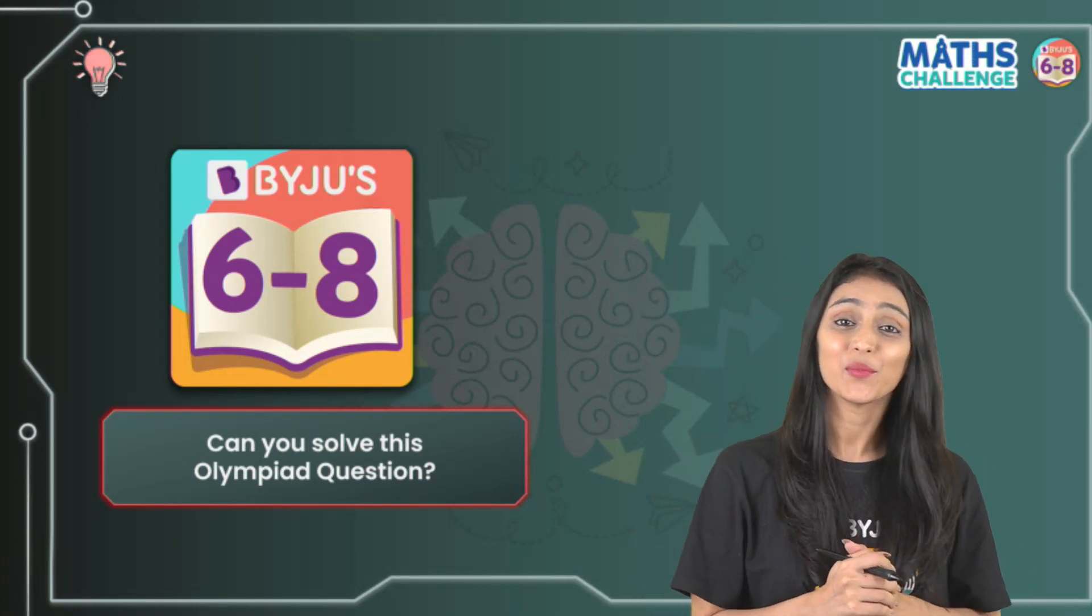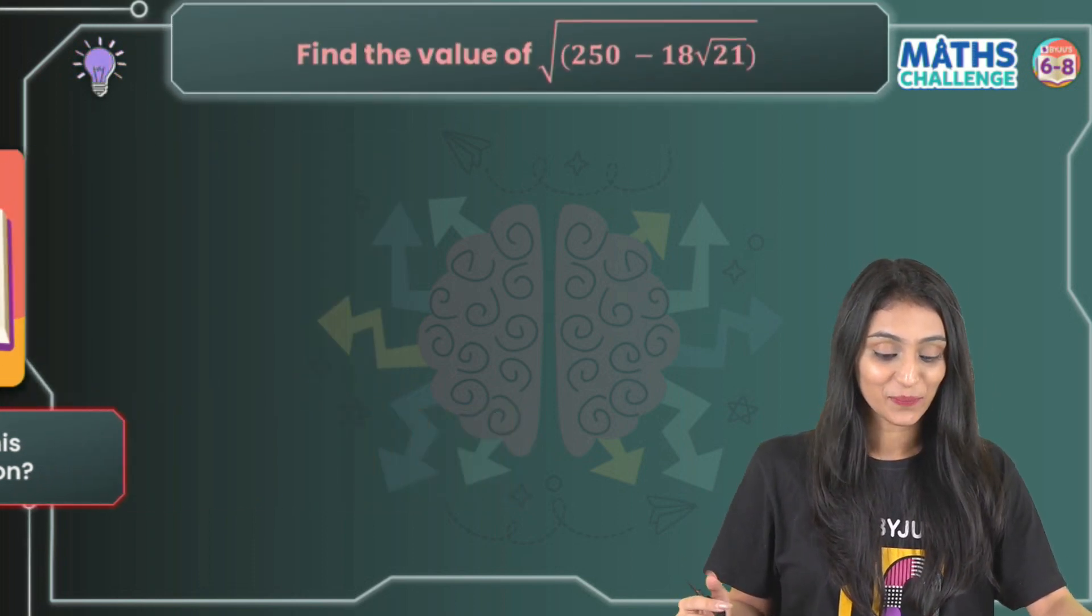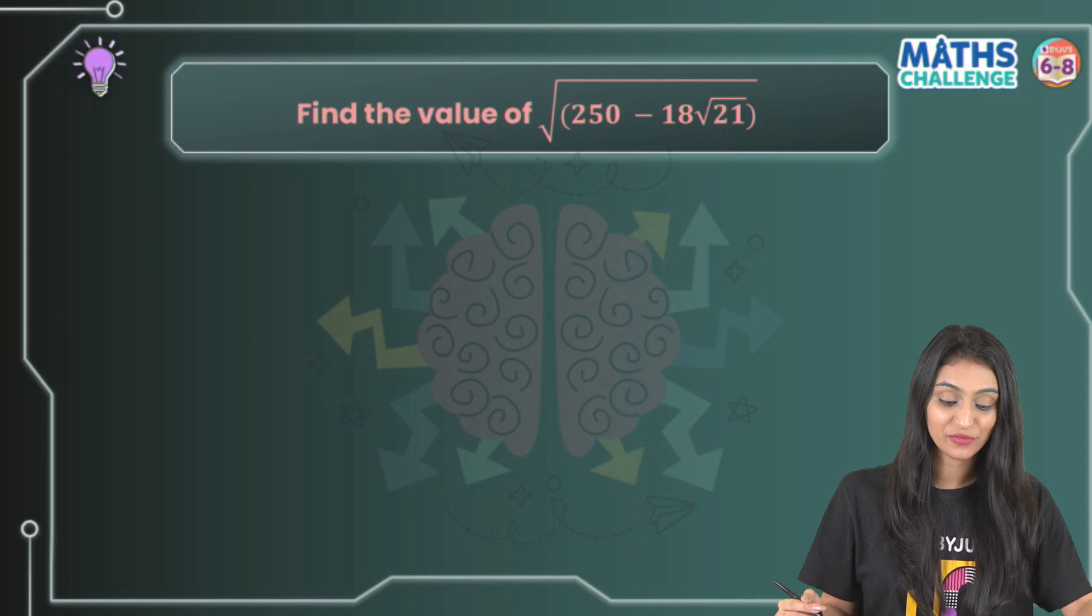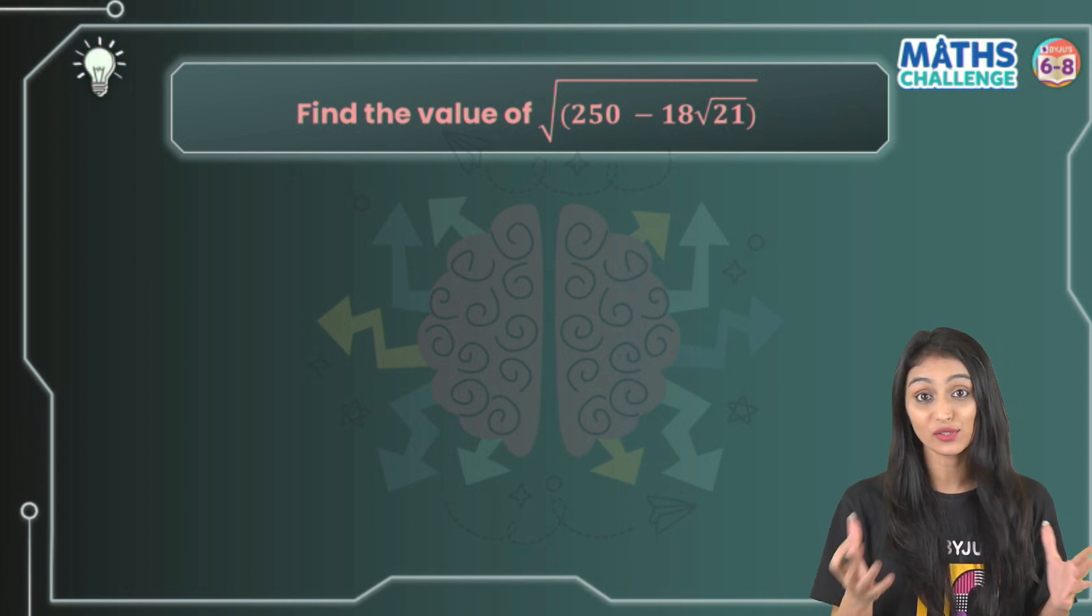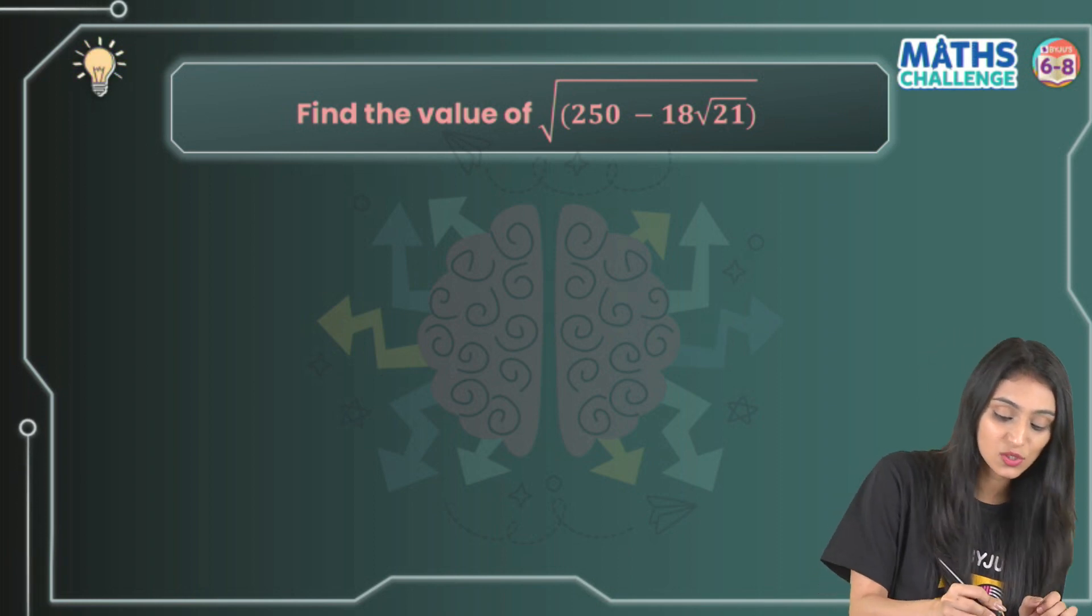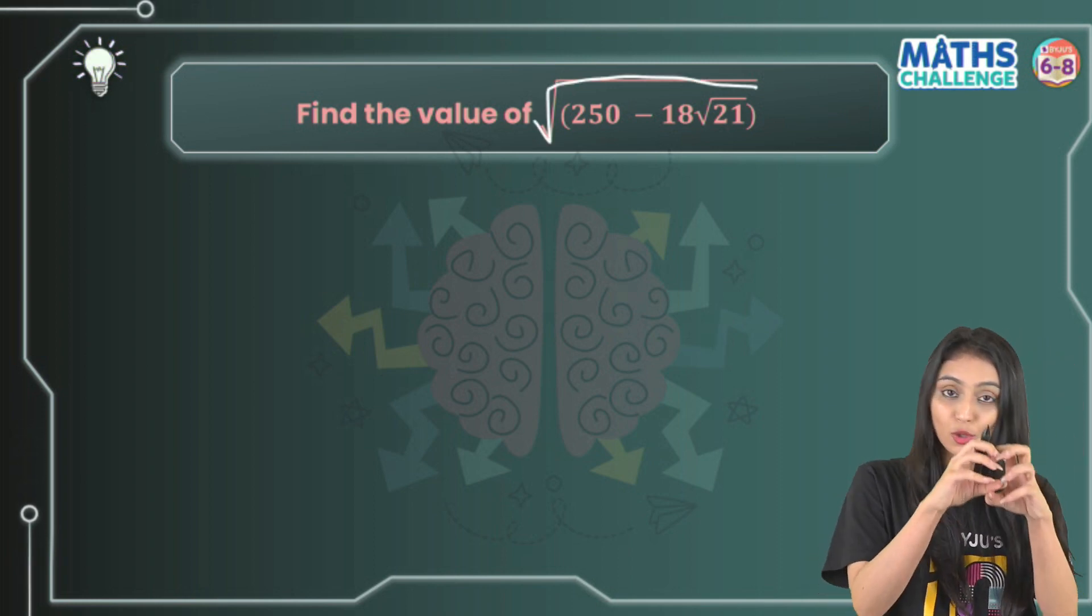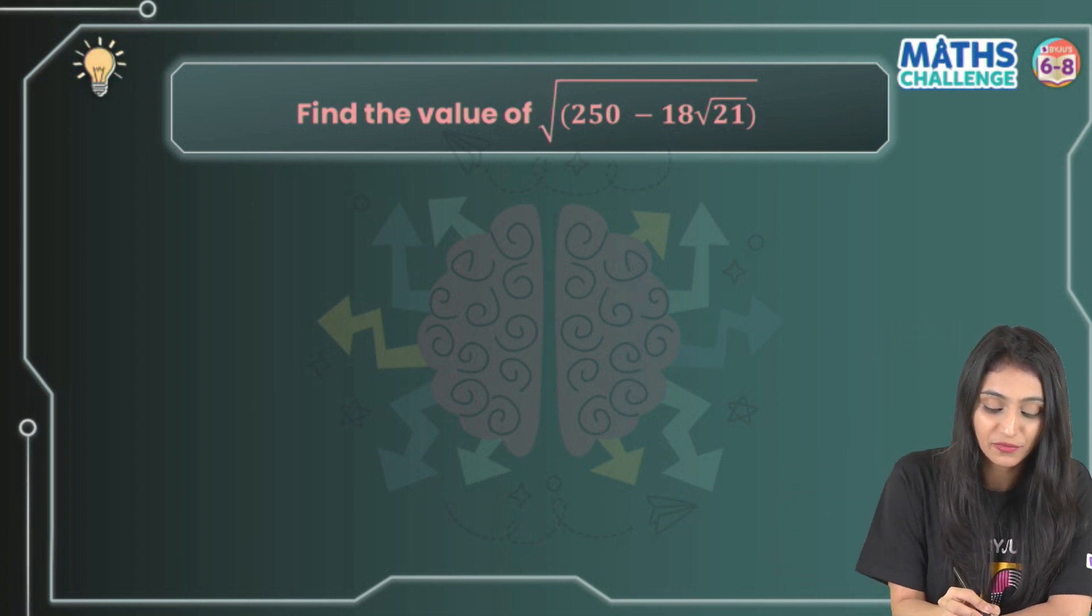Hey students, today I'm here with a very interesting Olympiad question. Let's take a look: find the value of √(250 - 18√21). Now this question involves a lot of square roots. How do we simplify this? Because there is a square root on all of this, let's start from here first.